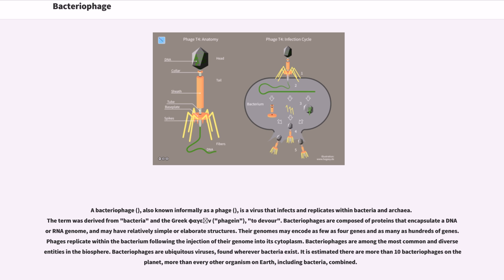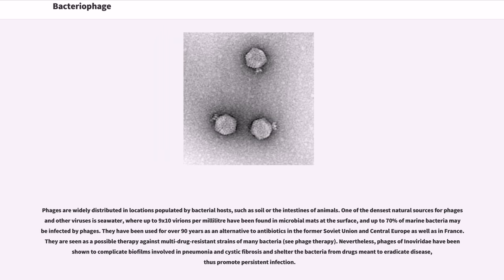Phages are widely distributed in locations populated by bacterial hosts, such as soil or the intestines of animals. One of the densest natural sources for phages and other viruses is seawater, where up to 9×10^8 virions per milliliter have been found in microbial mats at the surface, and up to 70 percent of marine bacteria may be infected by phages.